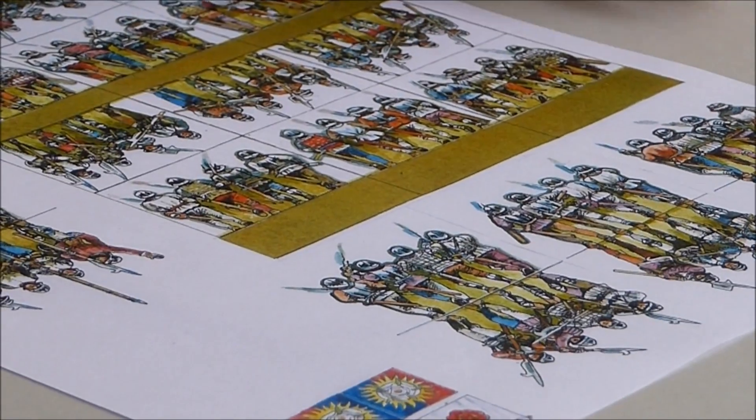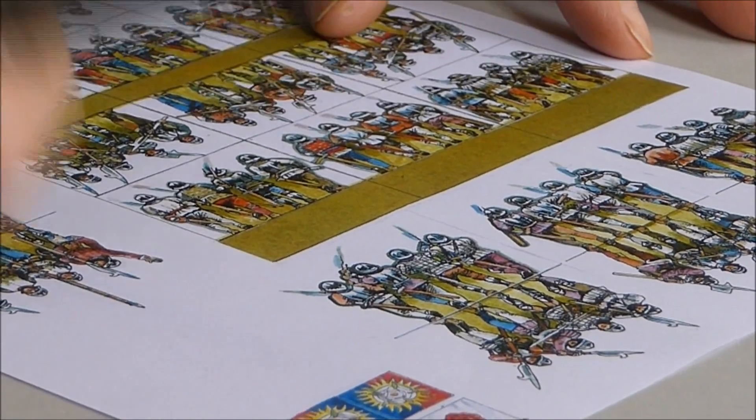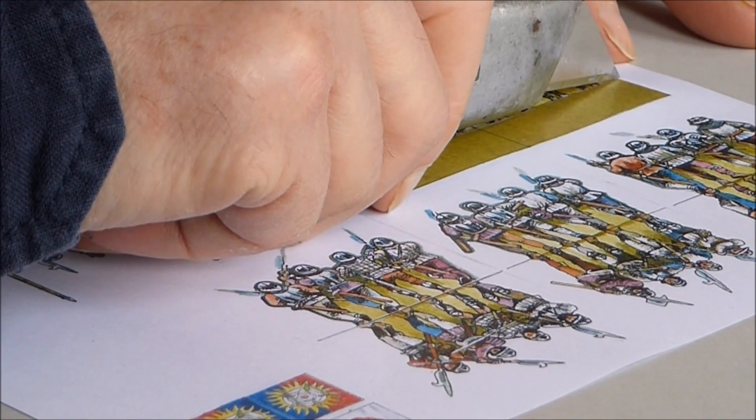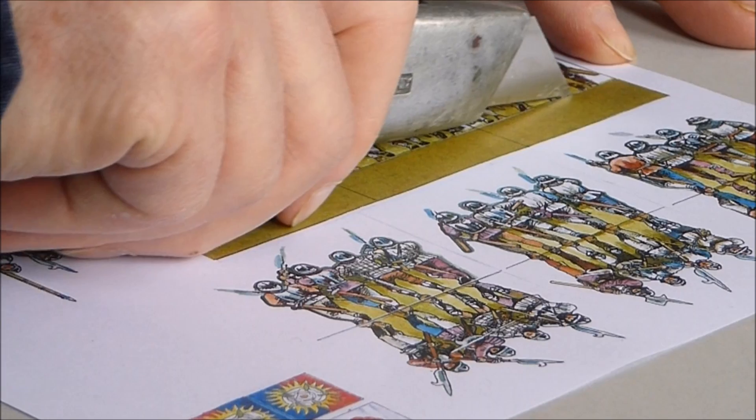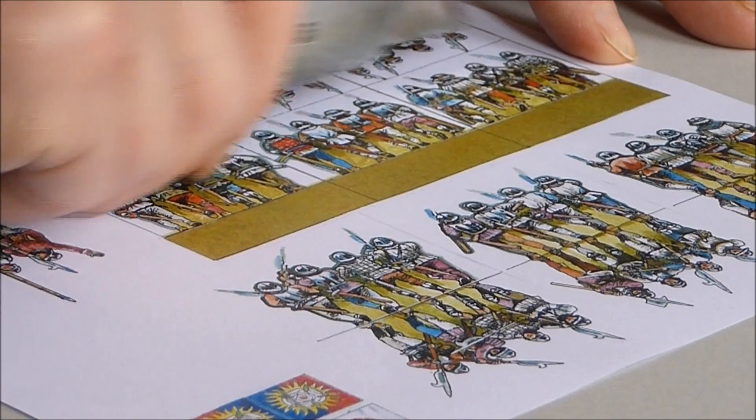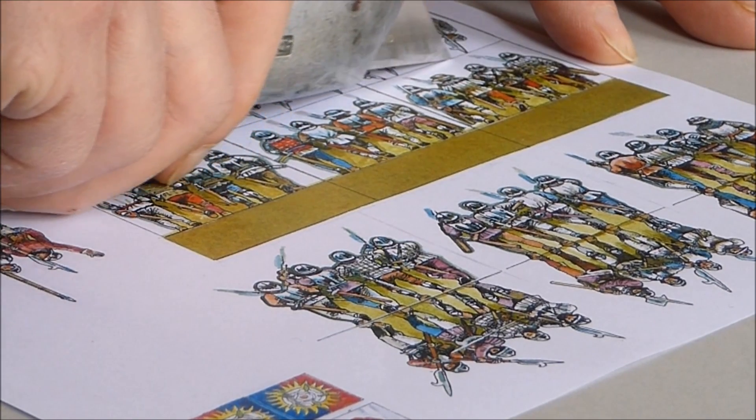The first thing you have to do is to score the sheet. This is a blade which is not terribly sharp and what I'm going to do is to simply lightly run it along the lines like this on the sheet.